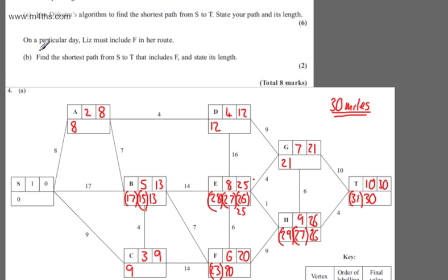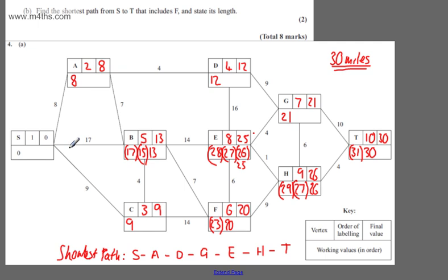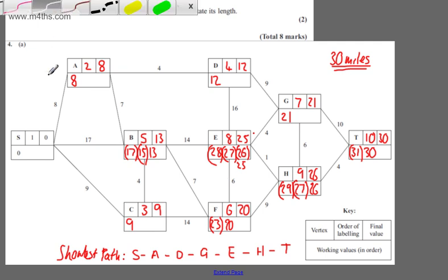The next part says: on a particular day, Liz must include F in her route. In part B for two marks, find the shortest path from S to T that includes F and state its length. When I introduced this question, I stated that Dijkstra's algorithm finds the shortest path from one given vertex to all other vertices in the network. So we can say S to F is 20. At this stage I've got to think: I need to get from F to T. I could go one way — that would be 9 — but it's easier to go 6 plus 1, and then 4.